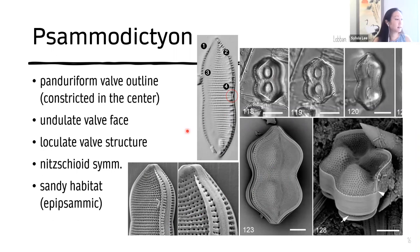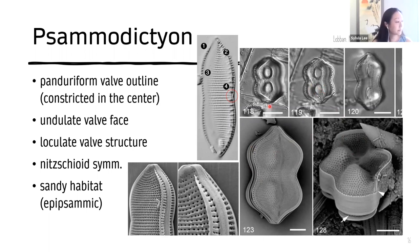Next we have Psammodictyon, which has a panduriform valve outline where it's constricted in the center. Again, like Tryblionella, it has an undulate valve face, but it's also very loculate — meaning it has these pockets, which you can really see in these specimens, including light micrograph specimens from Guam. As the name suggests, Psammodictyon is often associated with sandy habitats.